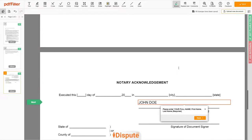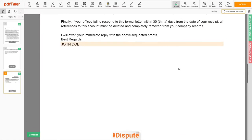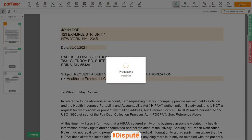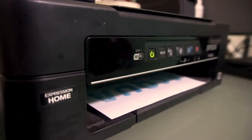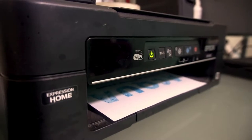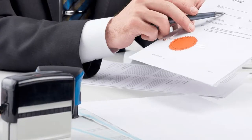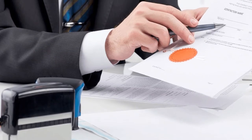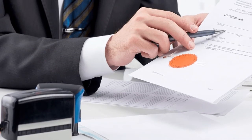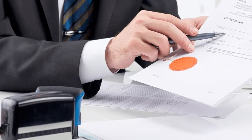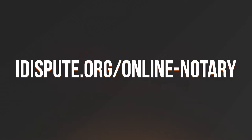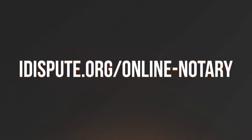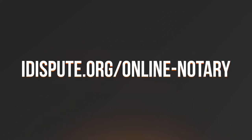Your document is ready. Check your personal information one more time and click the BUY button. Proceed with the payment to download and print out the document from your computer. Before the final step, you need to notarize your document. For your convenience, please use the online notary service by following the link idispute.org/online-notary.